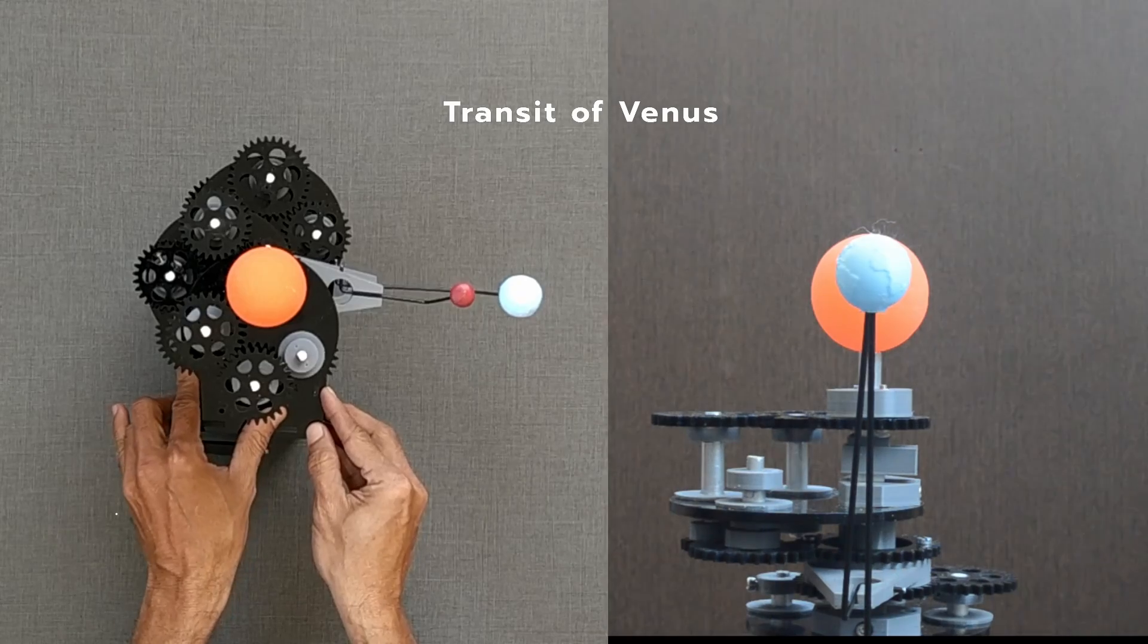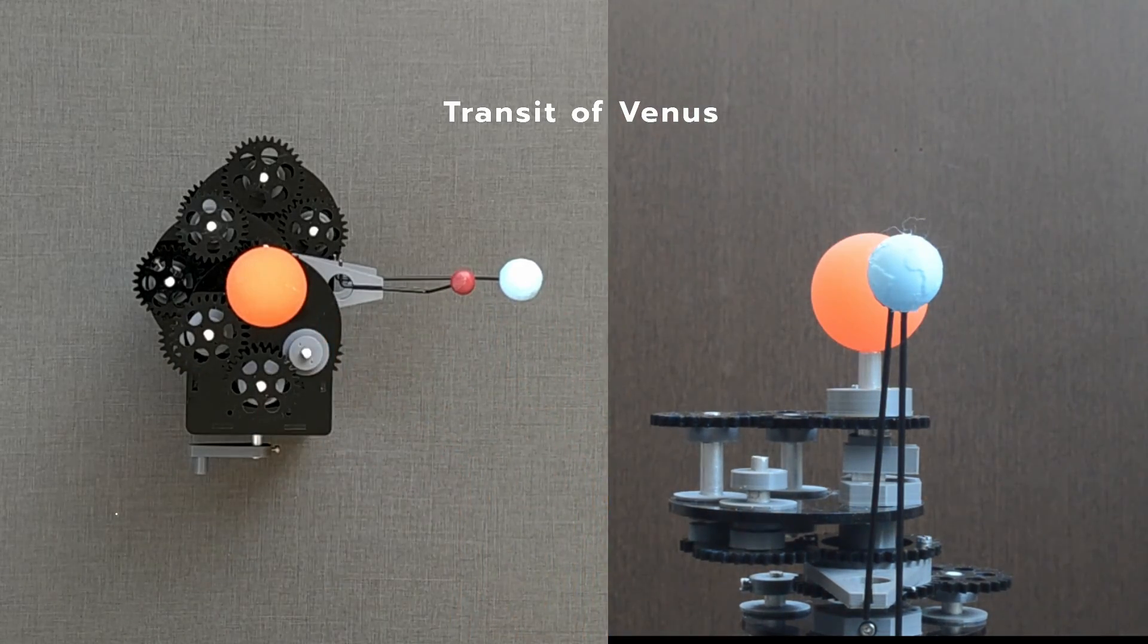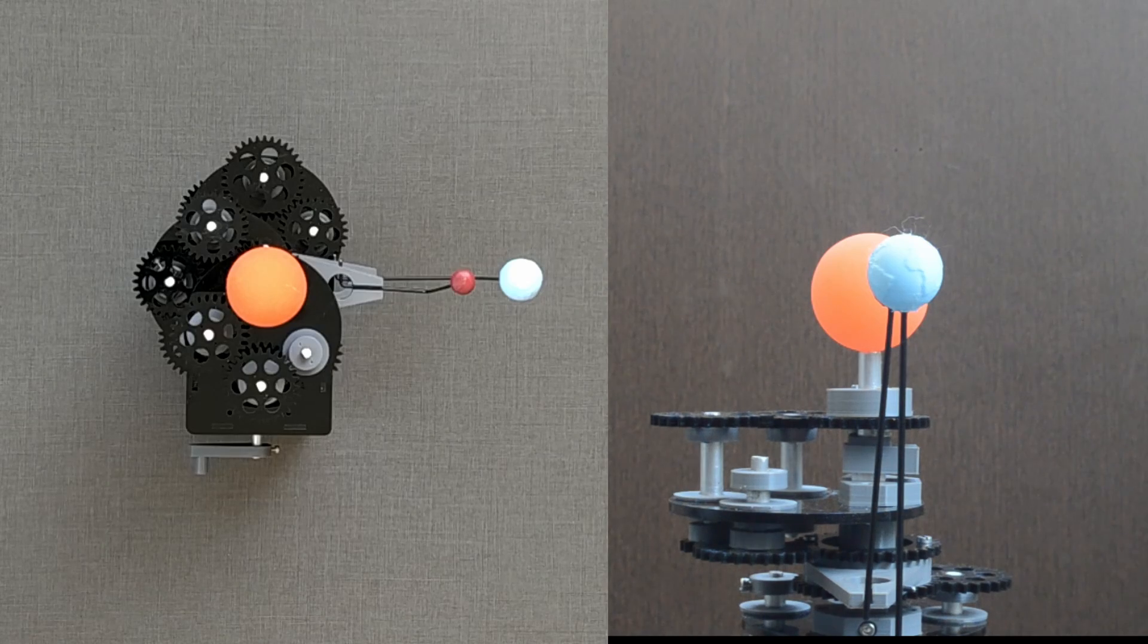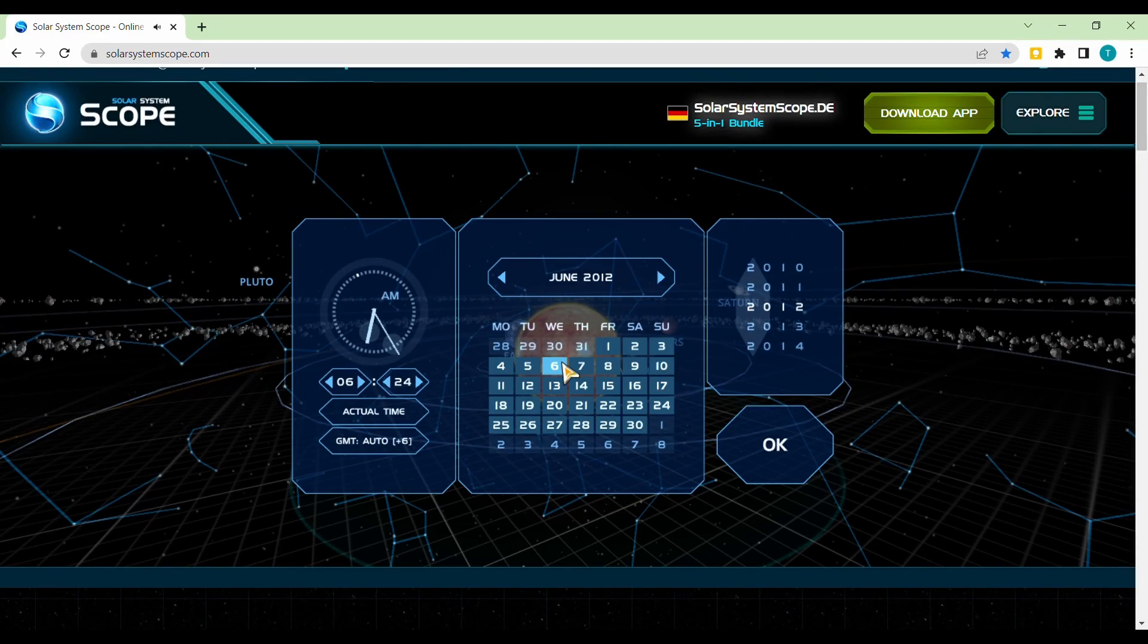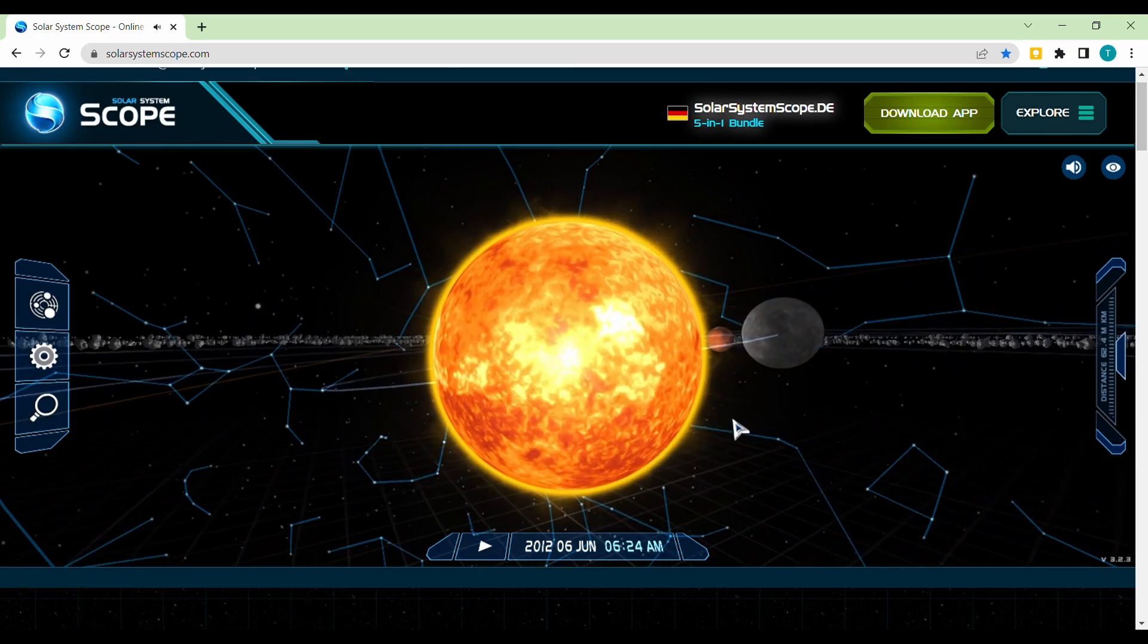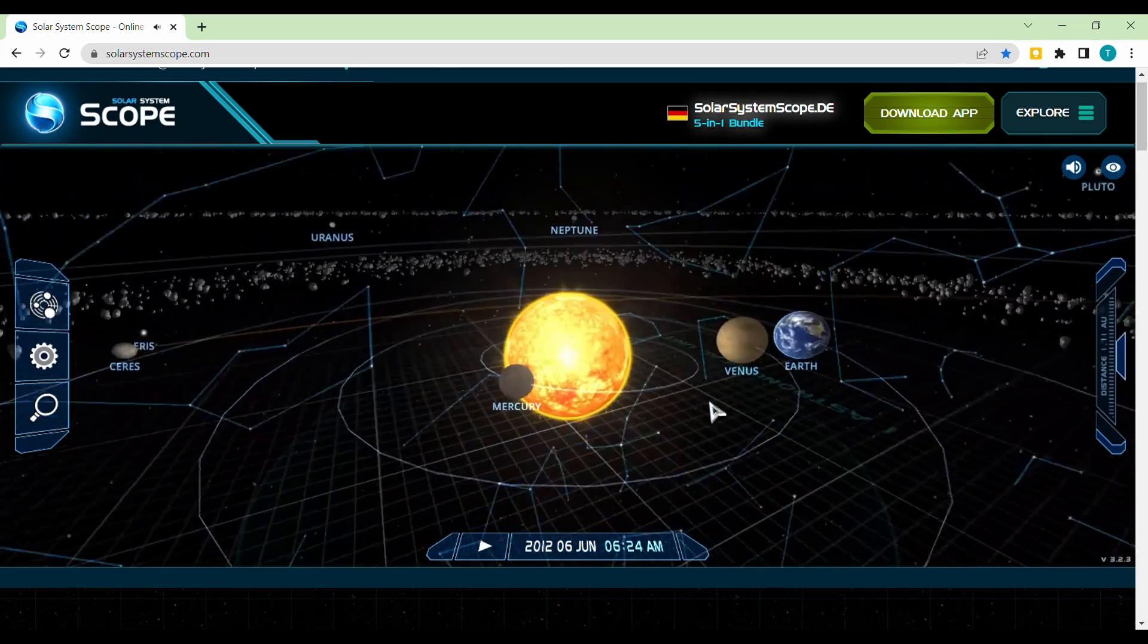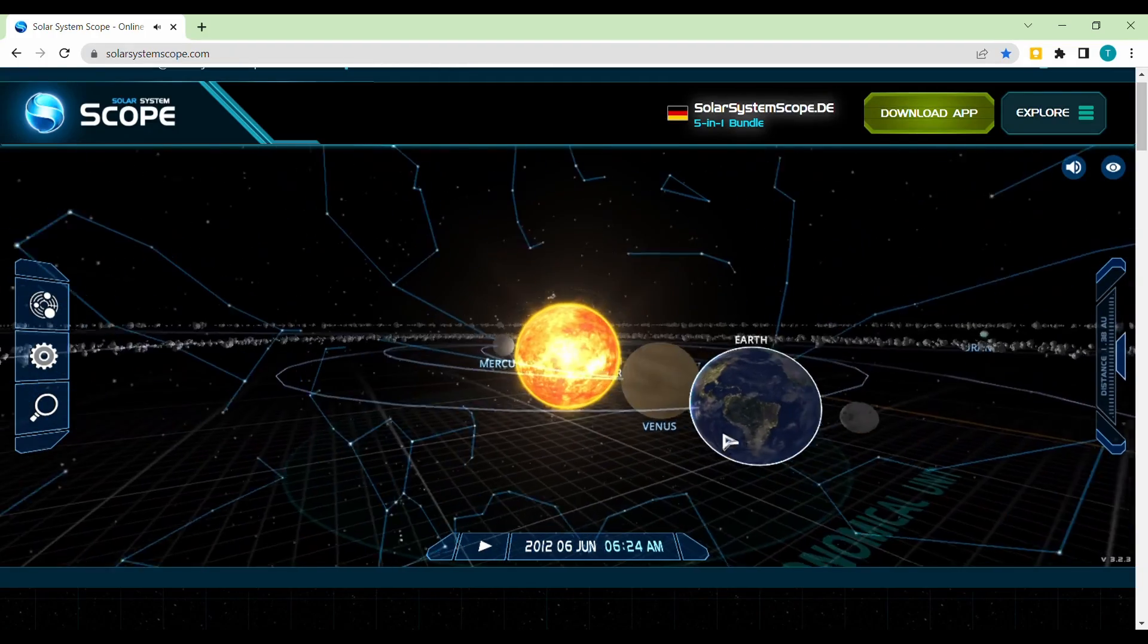The orbit inclined by 3.4 degrees related to that of Earth, transit of Venus is a very rare event. It occurred on 5th and 6th June 2012 and will occur again only in the next century, on 10th and 11th of December in 2117.